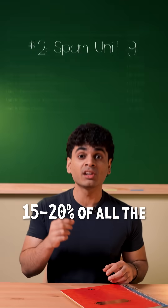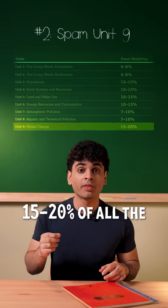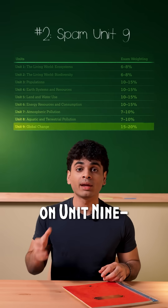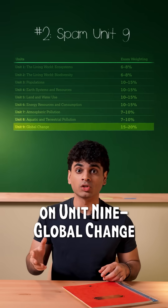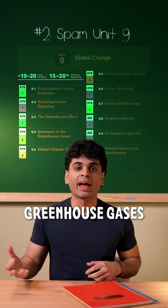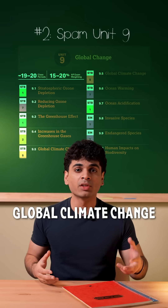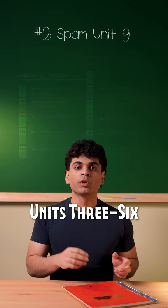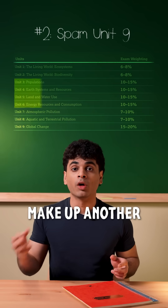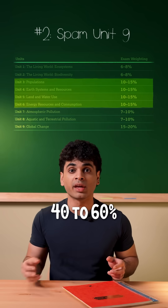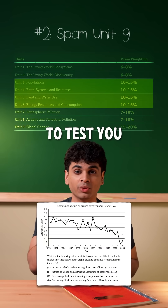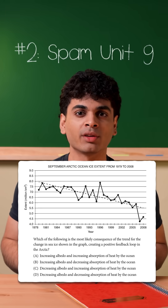Number two: spam unit nine. 15 to 20% of all the MCQs should focus on unit nine — global change. Think greenhouse gases, global climate change, endangered and invasive species, and more. Units three through six make up another 40 to 60%. Here's a unit nine question to test you — I'll give you the answer at the end.